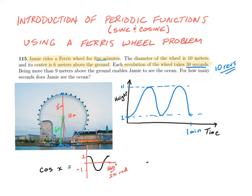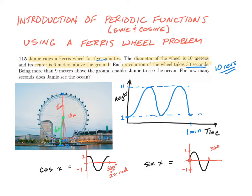Now let's look at the sine curve. The function sine x starts actually in the middle, goes up, goes down, and comes back up again. On a coordinate axis, it starts at 0, the highest it reaches is 1, the lowest it goes is negative 1, and once again it has a period of 360 degrees or 2 pi radians.